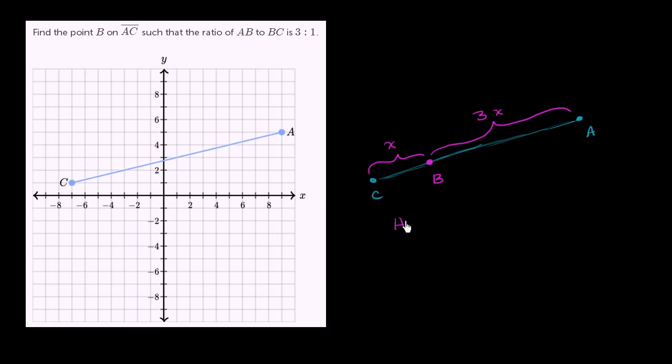Let me write this down. It would be AB to BC is going to be equal to 3x to x, which is the same thing as 3 to 1.